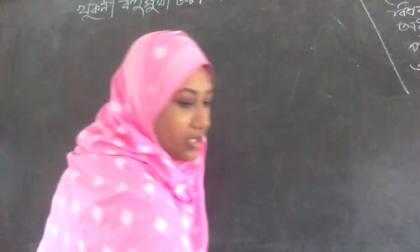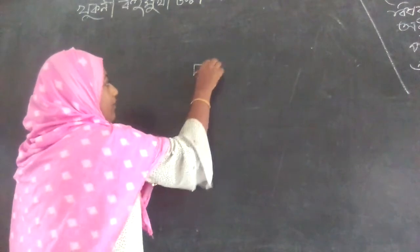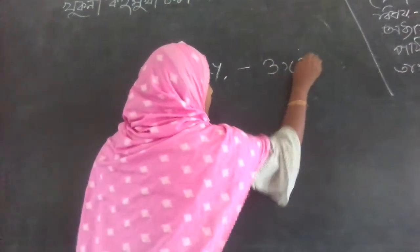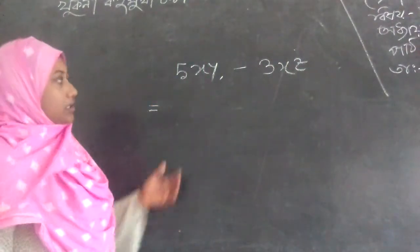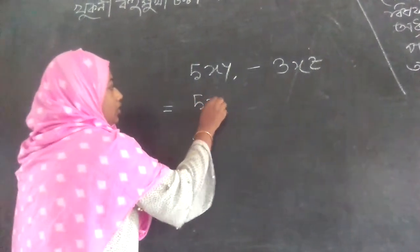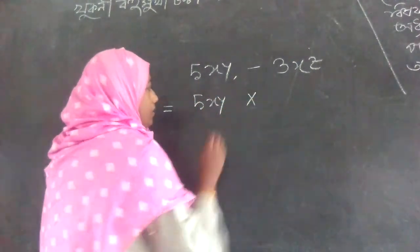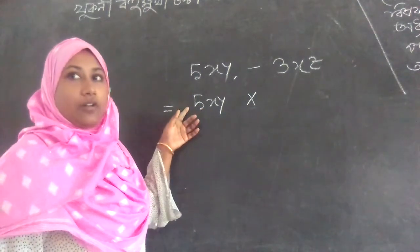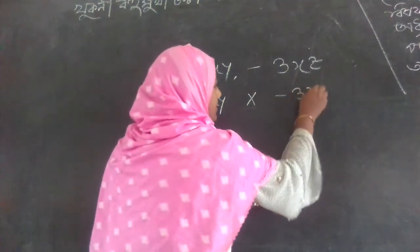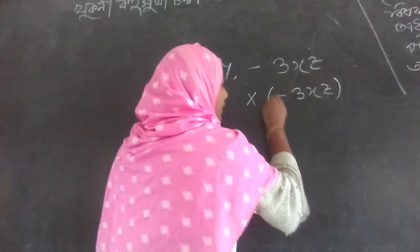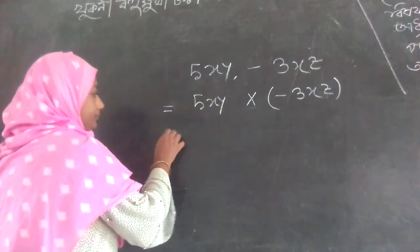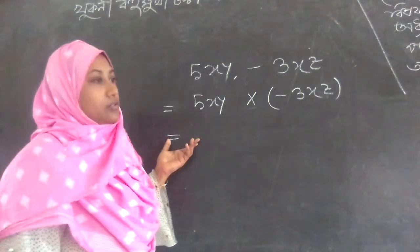One, moving to the next step. 5xy minus 3xy minus 3xj. We will be able to do this with our rules. We will be able to do this. Now, 5xy is the same way as we can continue — the same way as px.